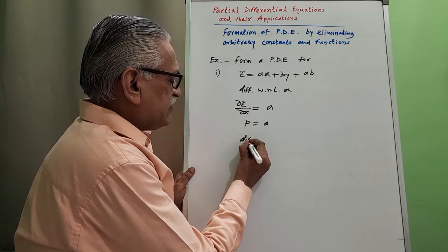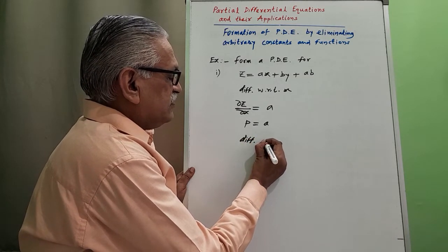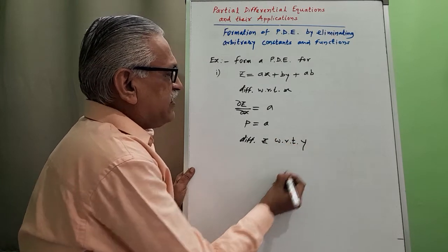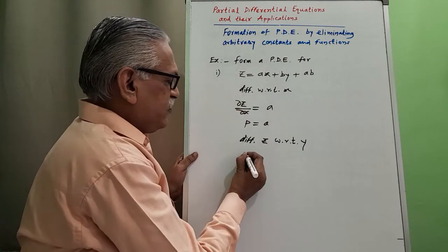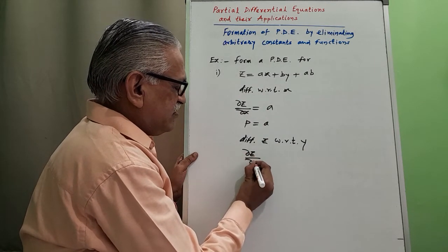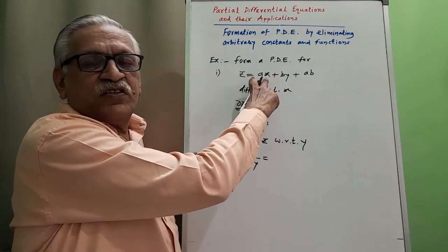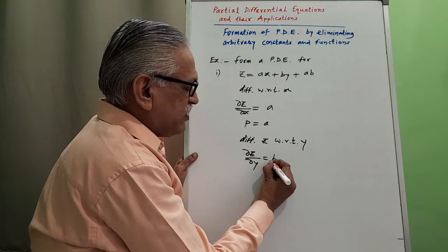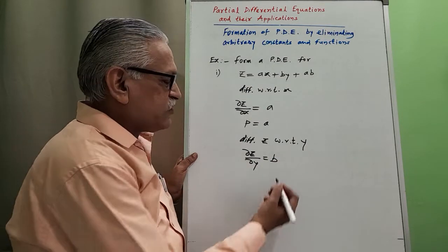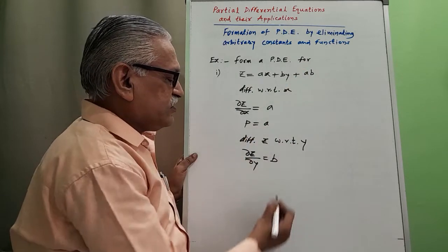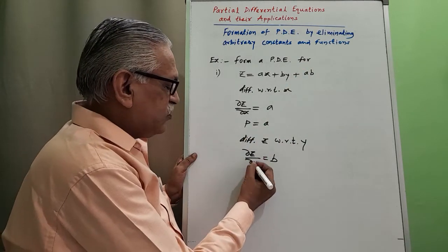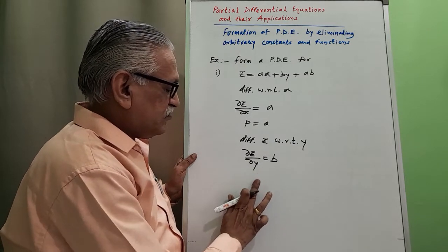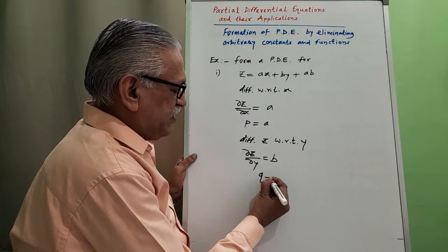Then differentiating the function z with respect to y, keeping x constant, we get dou z by dou y: the ax term gives derivative zero, b times y gives b, and ab is constant so its derivative is zero. Since dou z by dou y is q, we get b equals q.